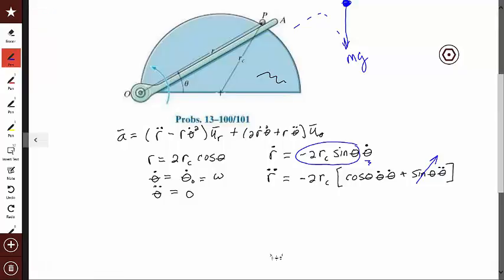So this guy is zero. And so my R double dot is equal to minus 2 Rc cosine of theta times, we're going to call that W, times theta dot squared is W squared. Okay, so that's my R double dot.